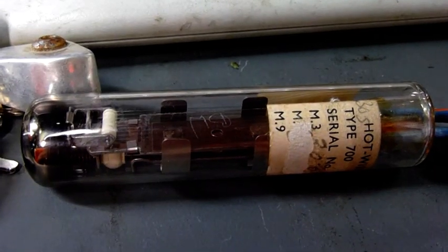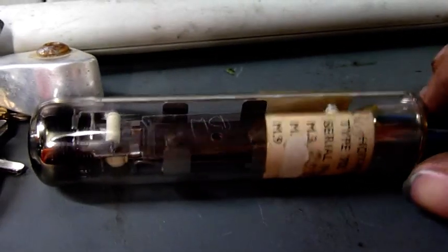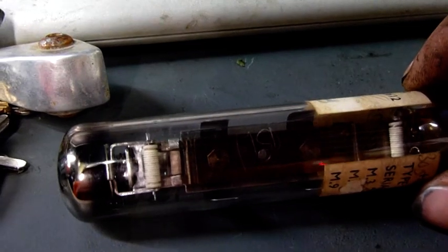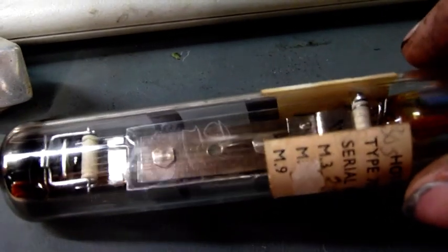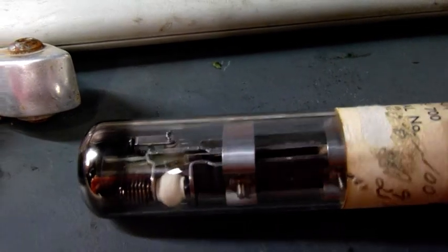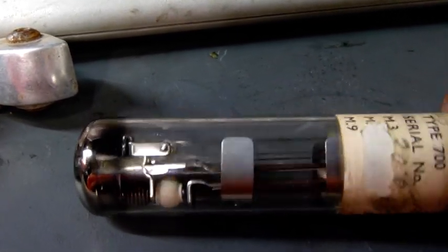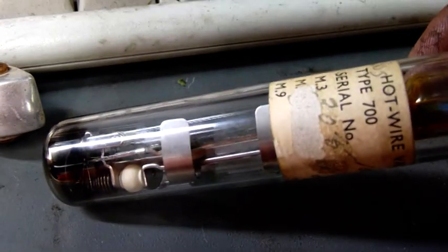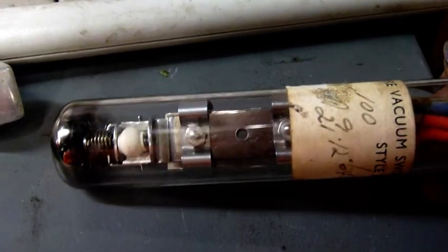I suppose I should make a correction to this. Those aren't resistors on the ends. They're little wire bobbins or tensioners. The wire runs over them and acts as a heating element. So there must be a bi-metal strip or something in there too. Interesting.